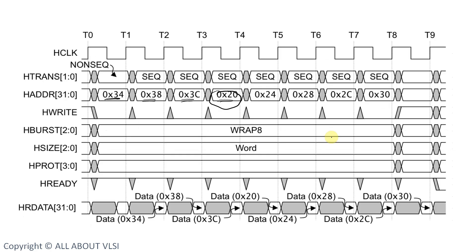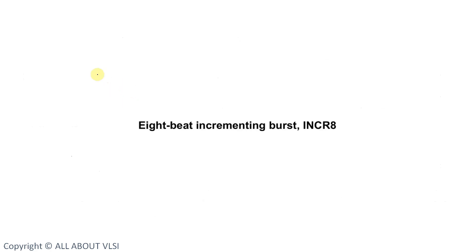In the INCR8 burst example, the size is half-word, which means 2 bytes. That is why the initial address is 0x34, next is 0x36, then 0x38, 0x3A, 0x3C, and so on — incrementing by 2 bytes each beat. This is how we calculate addresses for an INCR8 burst.